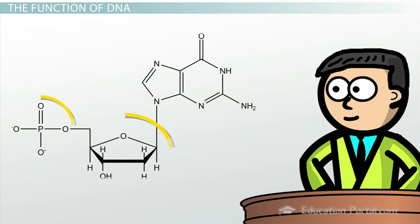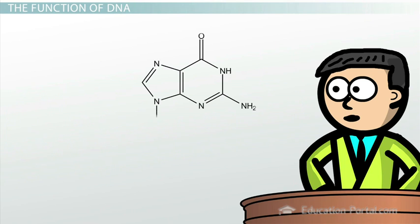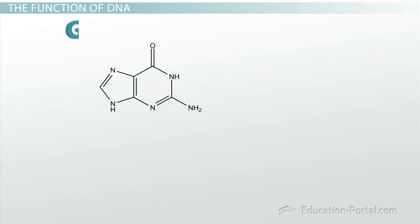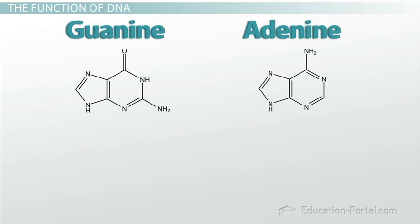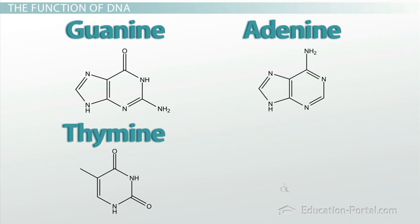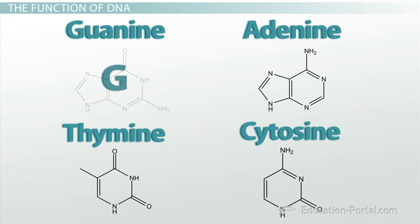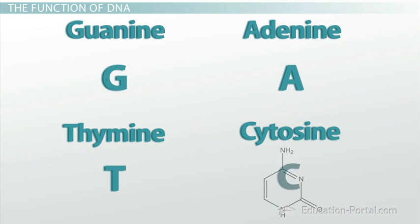The phosphate group and sugar are the same in every nucleotide, but there are four different nitrogenous bases: guanine, adenine, thymine, and cytosine. They are often abbreviated by the first letter of each nitrogenous base: G, A, T, and C. They essentially function as a four-letter alphabet.